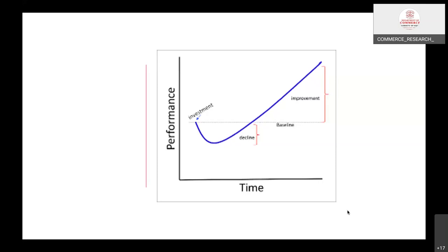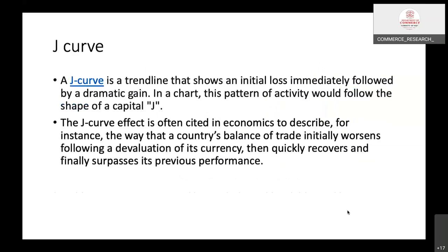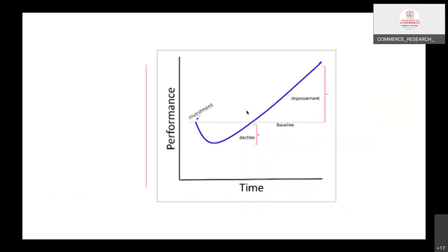So can you interpret this graph? J-Curve is a trend line that shows an initial low immediately followed by a dramatic gain. We see some initial lows here, and after that there is a sudden increase in performance.